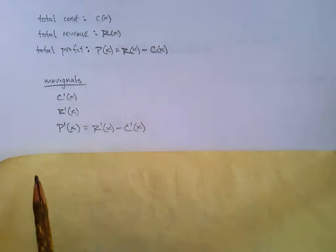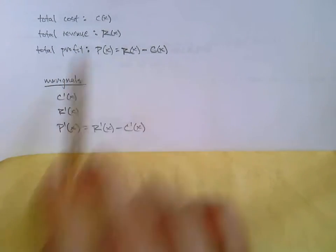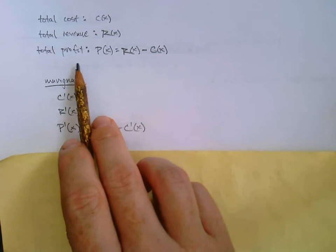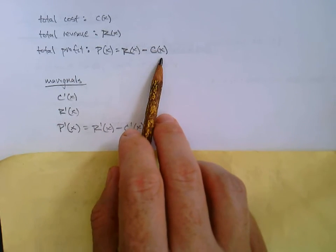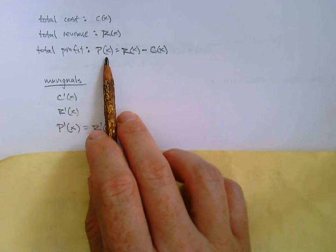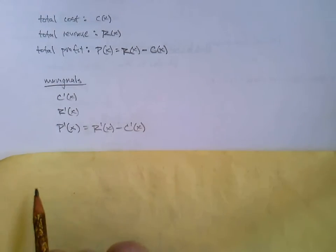Just like we have total cost C(x), you could also have total revenue, capital R(x), revenue being the money that you bring in. So there's the cost and then there's the revenue. And then when you put those together, now we're talking about profit. So how much money did I bring in minus how much money I've spent is how much money we've profited.